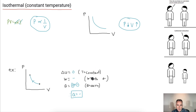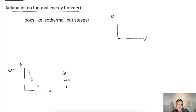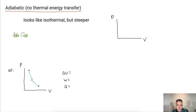Last one. You might think we've kept each of P, V, and T constant and we're done — but there's one more. It's called adiabatic, and it's a little sneaky. The key thing for adiabatic is that Q equals zero.